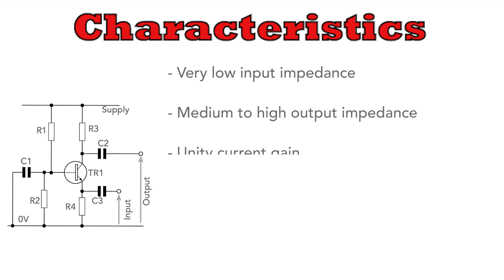The next characteristic is the current gain. As you might expect from the fact that almost the same current flows through the emitter and collector, the current gain is around unity. However, the voltage gain can be much greater and thus provides some useful amplification.